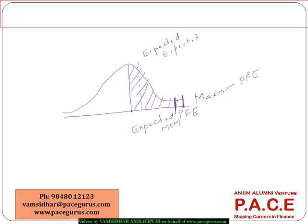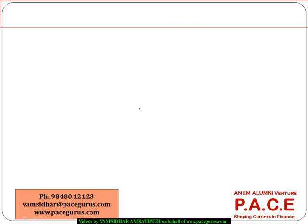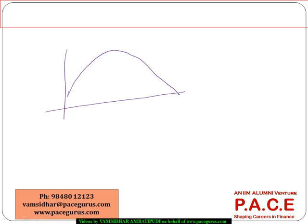When talking about expected exposure, it changes with the type of product. For different kinds of products, the shape of the expected exposure profile will be different. For instance, at time zero it may be a certain amount, and after some time it may change — so the expected exposure over the maturity period will vary depending on the particular type of security.